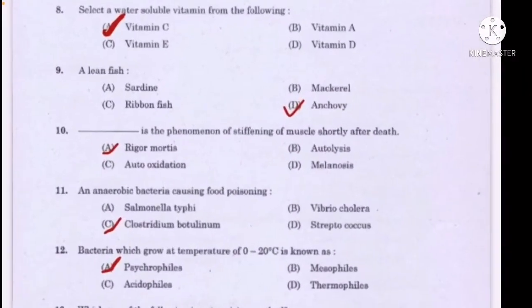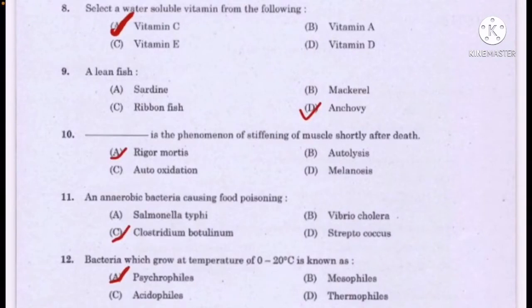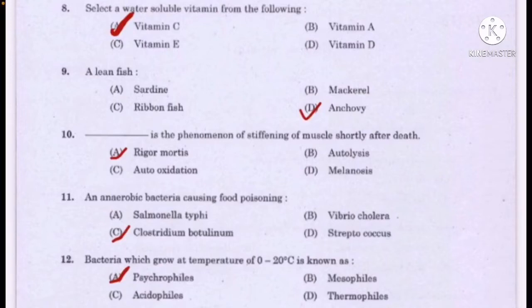Select a water-soluble vitamin from the following — correct answer option A: Vitamin C. A lean fish — correct answer option D: anchovy. Dash is a phenomenon of stiffening of muscle shortly after death — correct answer option A: rigor mortis. An anaerobic bacteria causing food poisoning — correct answer option C: Clostridium botulinum.